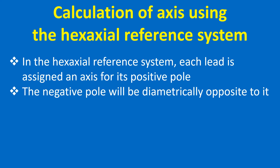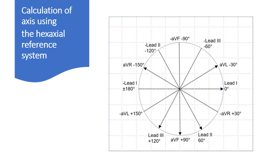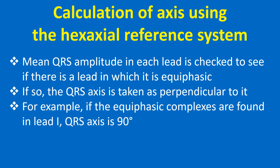For calculation of axis using the hexaxial reference system: in this system, each lead is assigned an axis for its positive pole, and the negative pole will be diametrically opposite to each. The positive poles of the leads are marked by arrows. Mean QRS amplitude in each lead is checked to see if there is a lead in which it is equiphasic. If so, the QRS axis is taken as perpendicular to it.